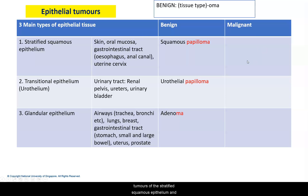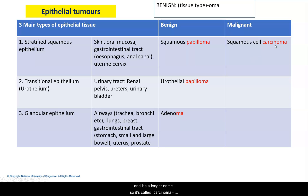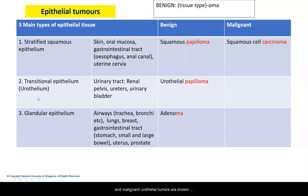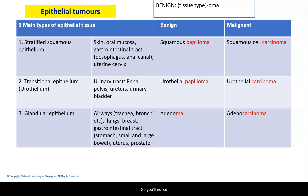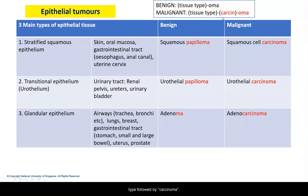Now let's look at malignant tumours of the stratified squamous epithelium. We start with the words squamous cell, and it's a longer name — squamous cell carcinoma. Remember, malignant epithelial tumours are known as carcinoma. Malignant urothelial tumours are known as urothelial carcinoma. Malignant glandular tumours, bearing in mind the prefix adeno, are called adenocarcinoma. You'll notice that malignant epithelial tumours are tissue type followed by carcinoma.